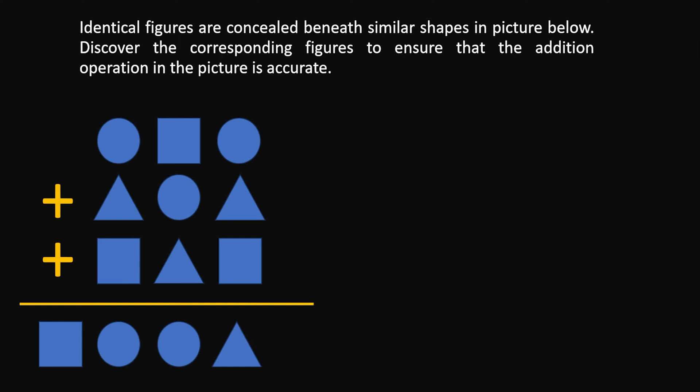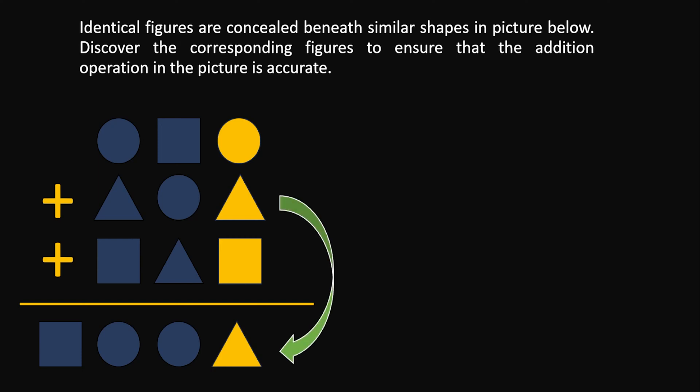The right way to approach this problem is to divide it into three separate columns. If we take a look at column number 1, we can see that we have a circle, a triangle, and a square shape, and the result is a triangle shape again. So the triangle shape repeats itself both in the addition operation and in the result.